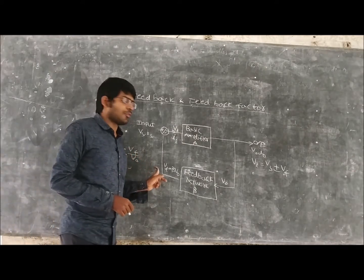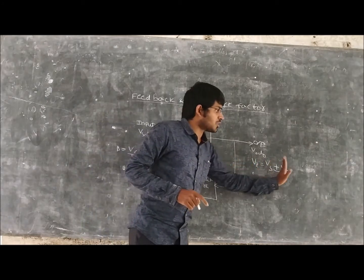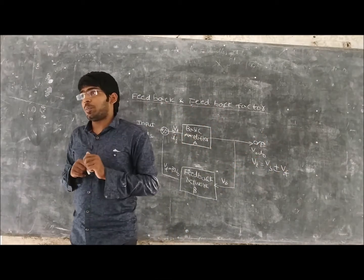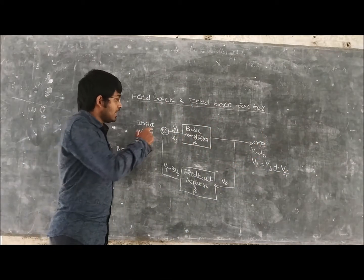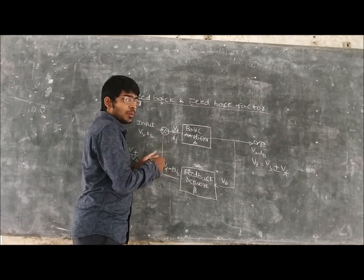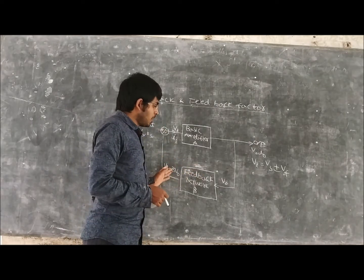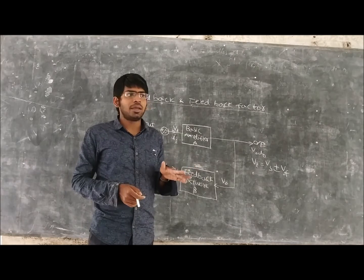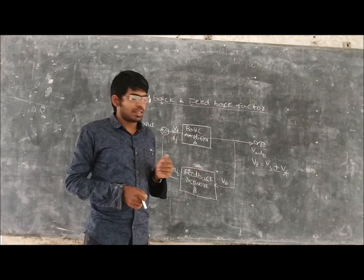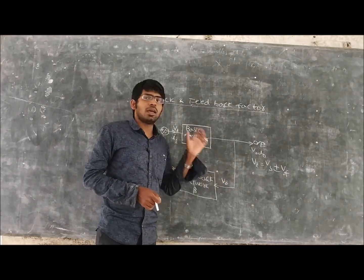This feedback, if we are trying to add this feedback to the input—Vs plus Vf—then it is called positive feedback. If you are trying to subtract, Vs minus Vf, from the input, then it is called negative feedback. So either the feedback can be positive feedback or it can be negative feedback. And the feedback factor beta is equal to Vf by V0.